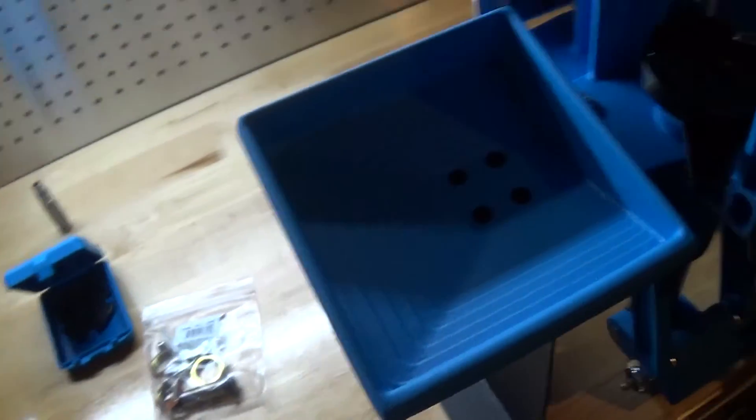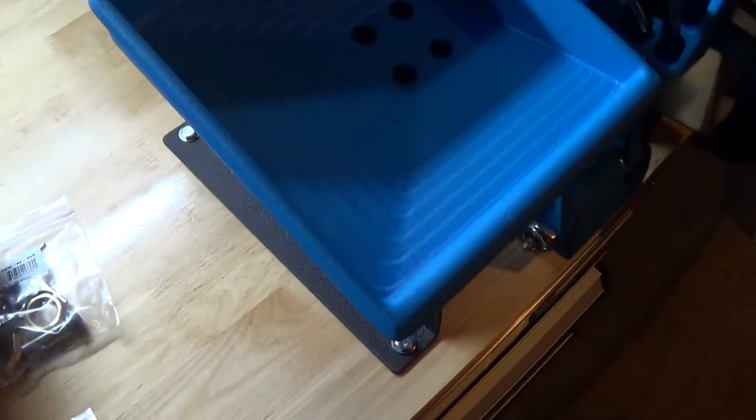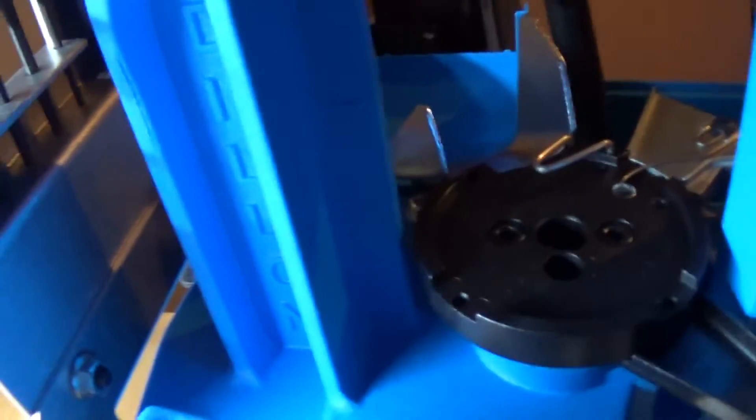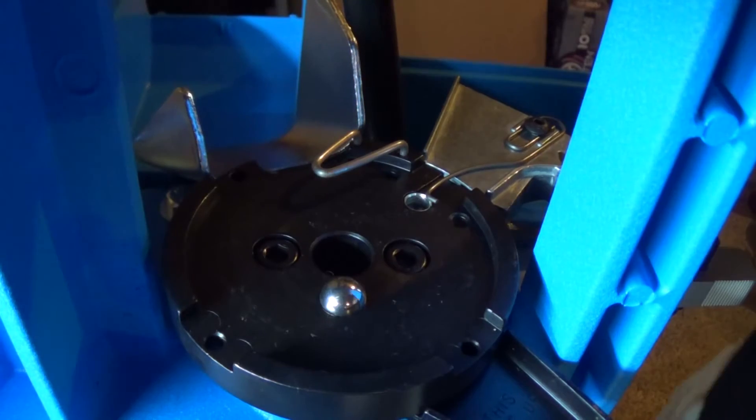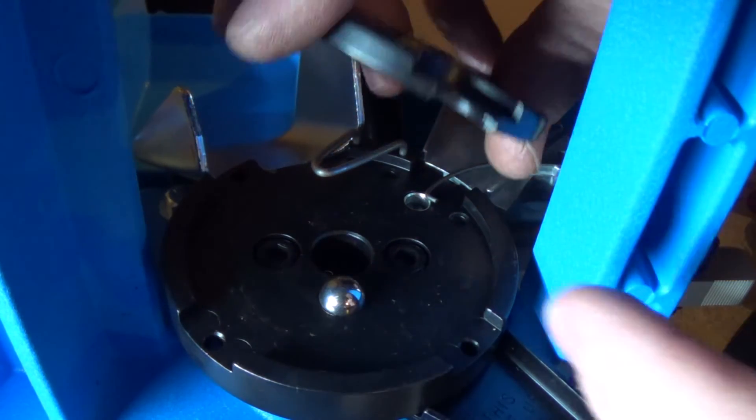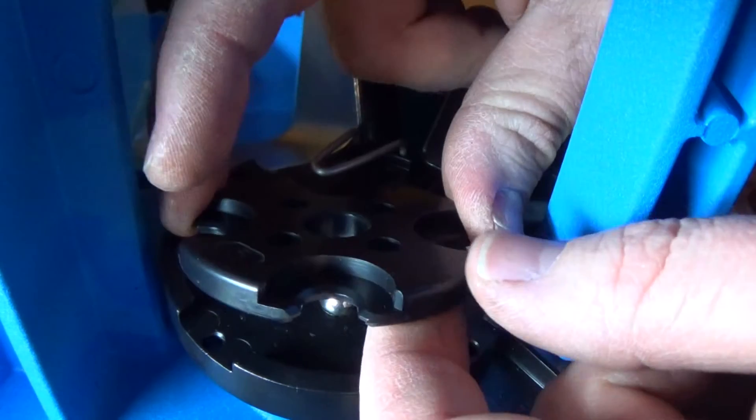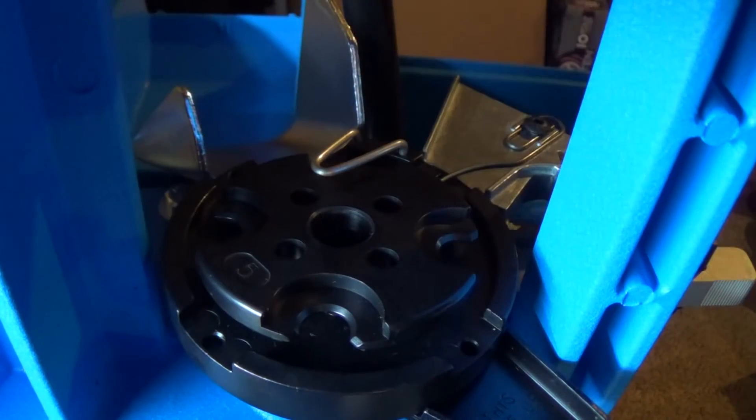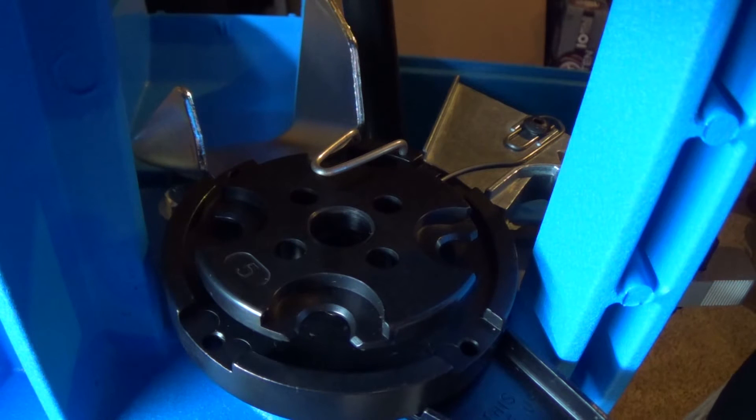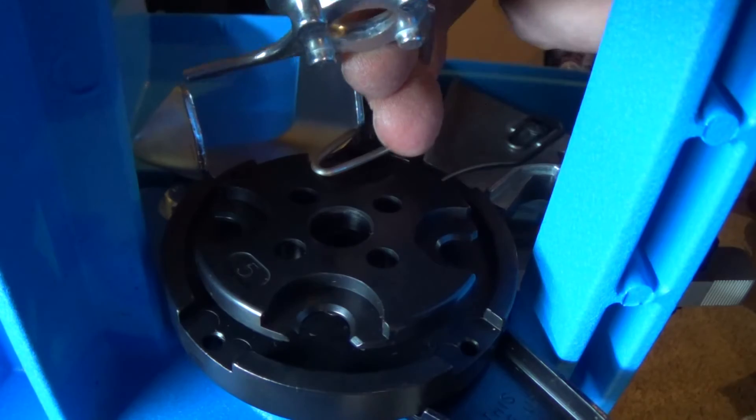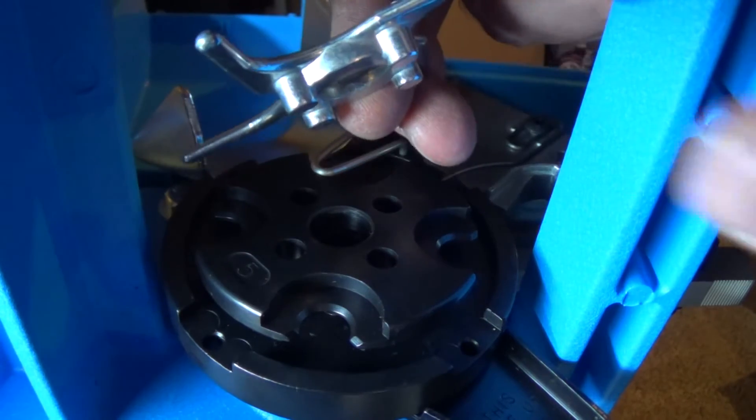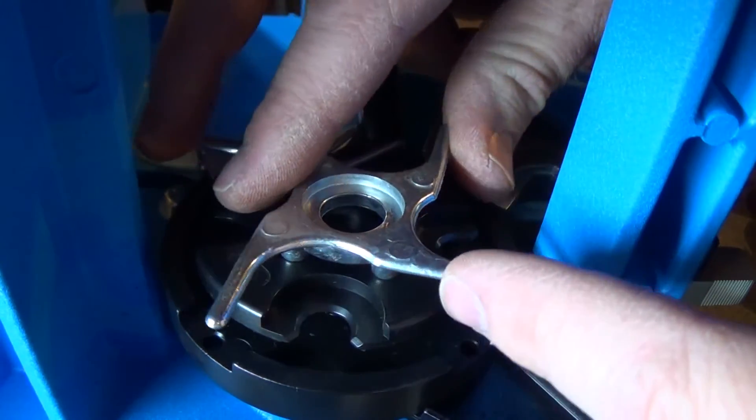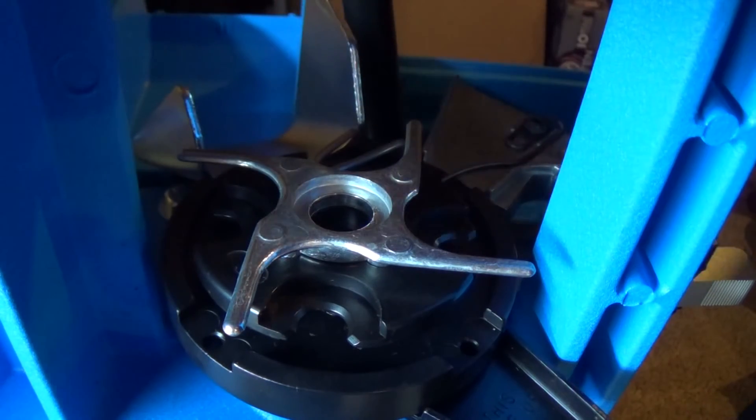Alright, so the bullet tray is installed. I am going to stick the shell plate in, number side up. Next comes the index sprocket on top of the shell plate. We are going to make sure the locator posts go into the corresponding holes in the shell plate. So if you can see there is the, what we are talking about there. Ka-chow.